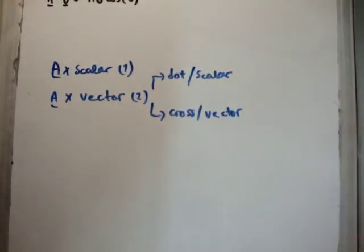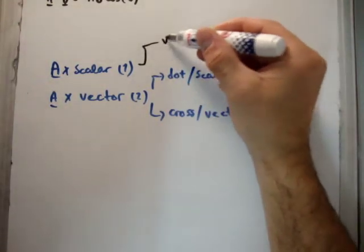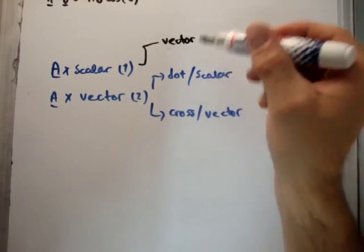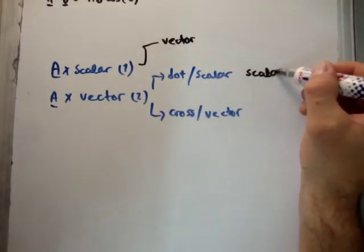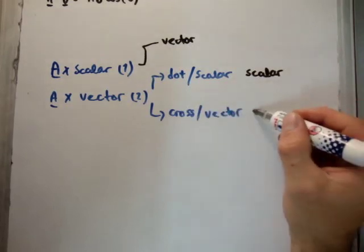Now, the thing here is that if you multiply a vector by a scalar, you get back a vector. But if you take the dot or scalar product, you get back a scalar. And if you take the cross or vector product, you get back a vector.